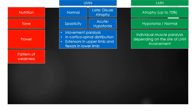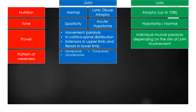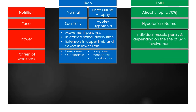The pattern of weakness in UMN lesions could be hemiparesis, quadriparesis, paraparesis, monoparesis, or faciobrachial weakness. In LMN lesions, it could be generalized, predominantly proximal, predominantly distal, or focal.